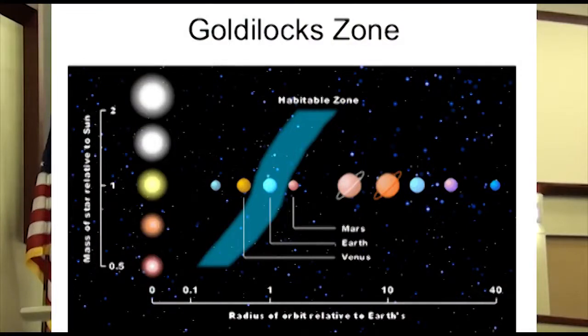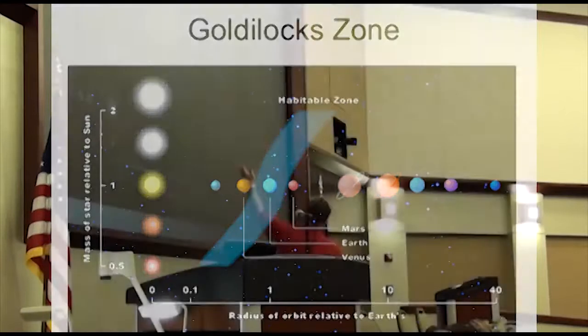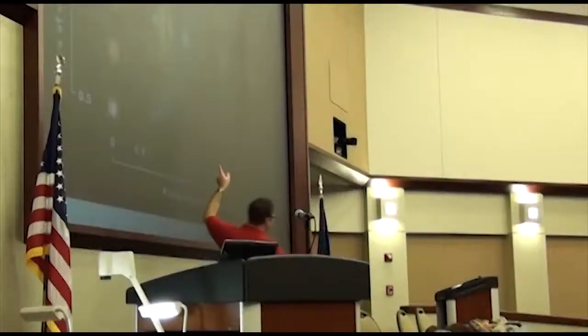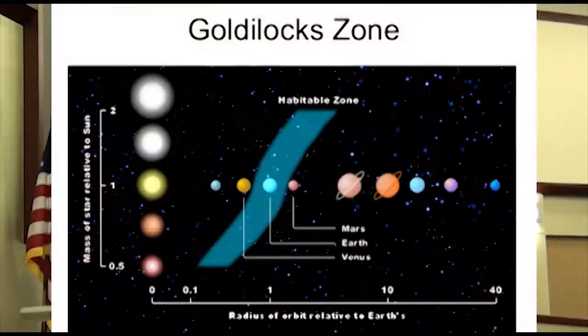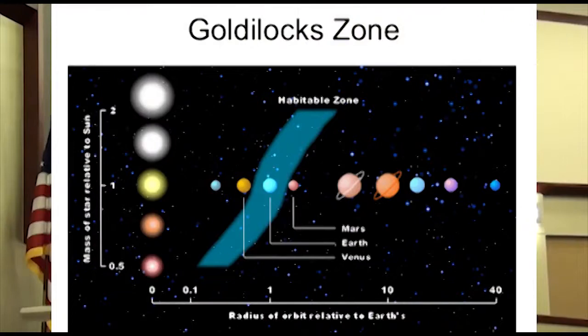Just like the story with the porridge — not too hot, not too cold. Earth is right in that perfect little range where it's warm enough for life. We have liquid, solid, and vaporous water here on our planet, and that makes our planet dynamic and active. Our planet is much more changing than most of the other planets.